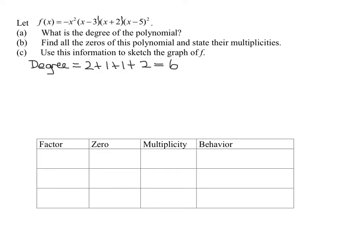Now in part b, we need to find all the zeros of the polynomial. So that means I have to set f(x) equal to 0. So 0 equals negative x squared times x minus 3 times x plus 2 times x minus 5 squared. Now all we have to do is, it's already nicely factored, we set each factor equal to 0.